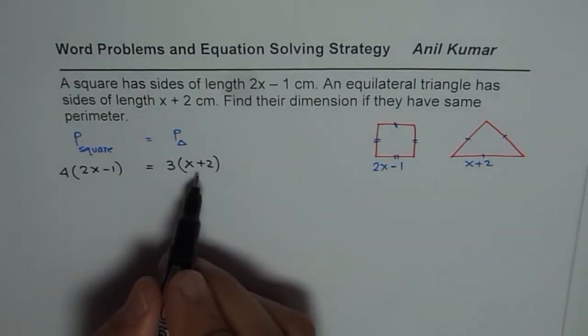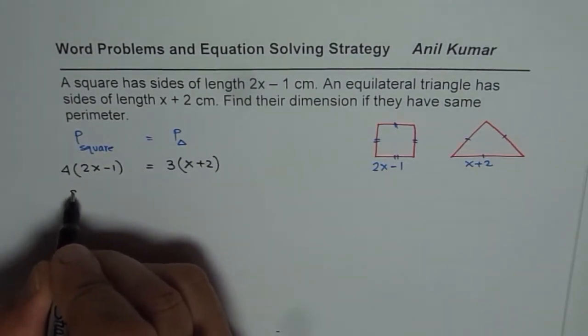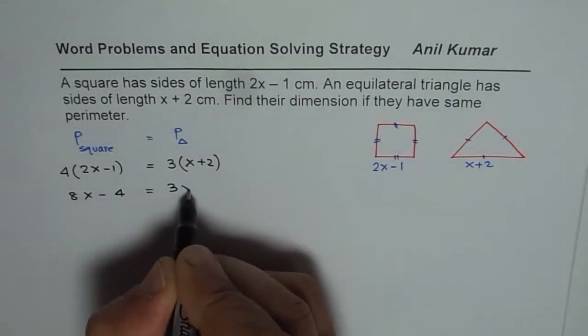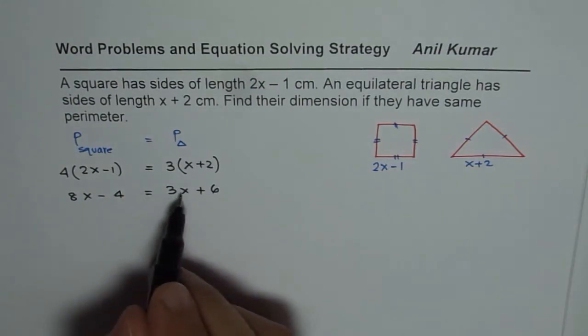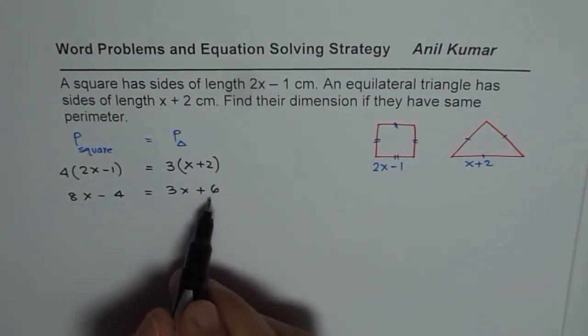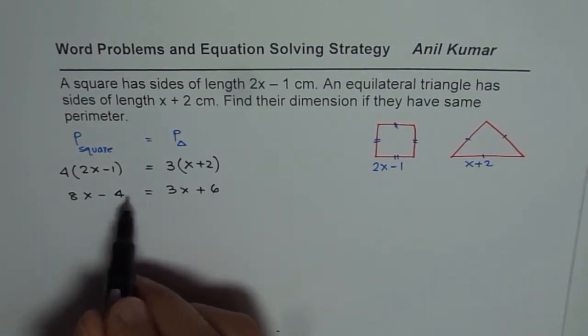To solve this equation, we can expand and then simplify. So let us expand, we get 8x-4 on the left side and 3x+6 on the right side. Now we have an equation which has variable on both the sides. To solve such an equation, we will group the variables on the left side and constants to the right.